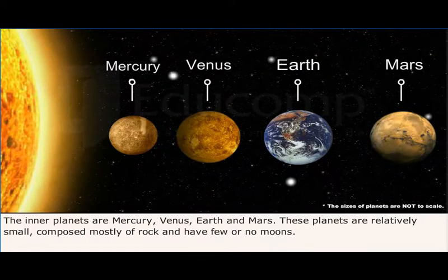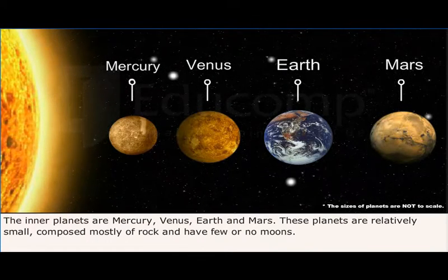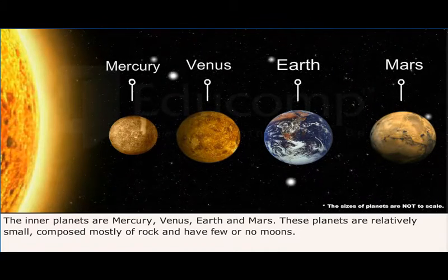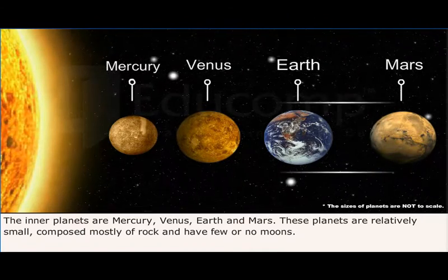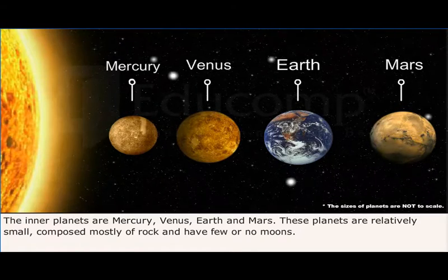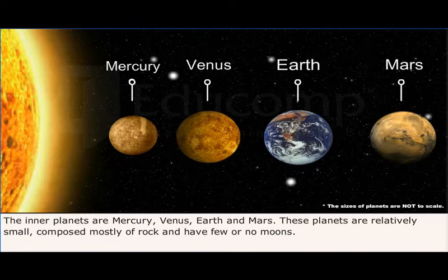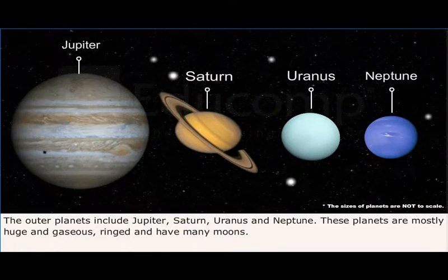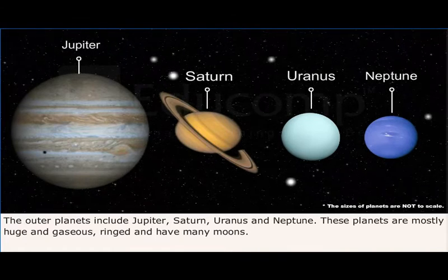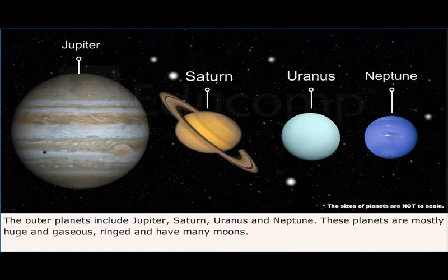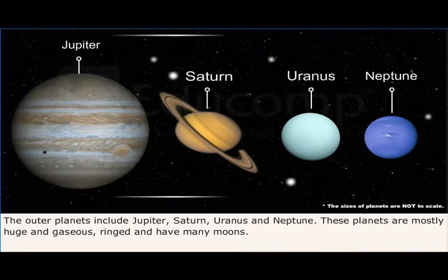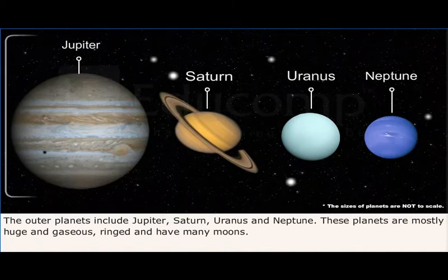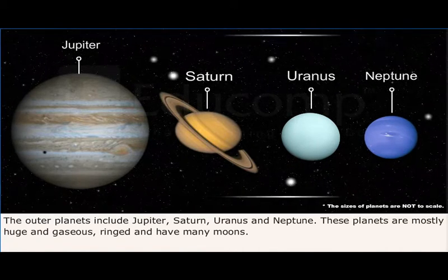The inner planets are Mercury, Venus, Earth, and Mars. These planets are relatively small, composed mostly of rock, and have few or no moons. The outer planets include Jupiter, Saturn, Uranus, and Neptune. These planets are mostly huge and gaseous, with rings and many moons.